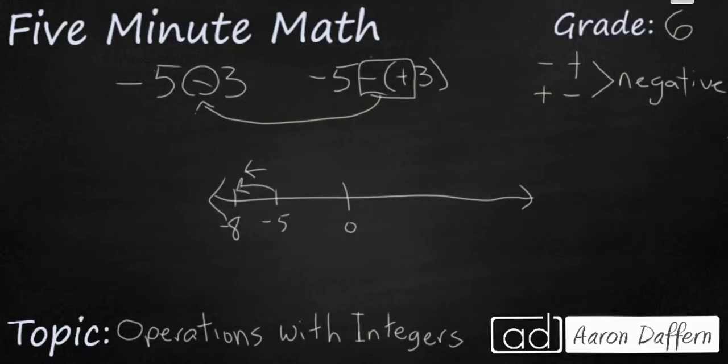But what happens if I change this expression right here? What if I change it to negative 5 minus, but rather than a positive 3, I'm going to make it a negative 3. Negative 5 minus negative 3, well now you see I have two negatives right next to each other. So I have two signs that are the exact same, and they're next to each other.